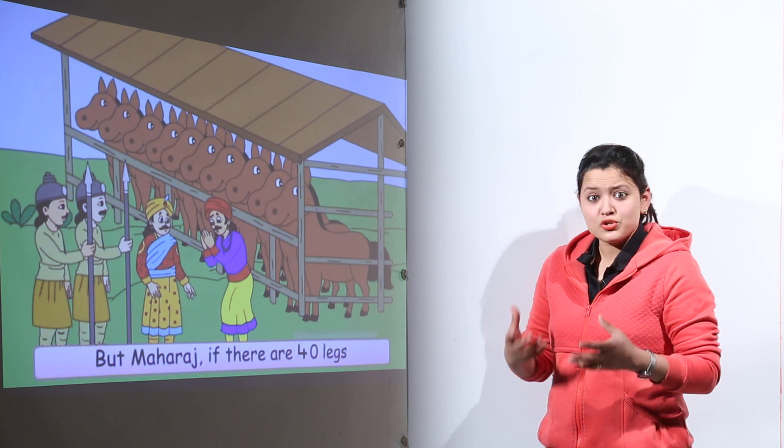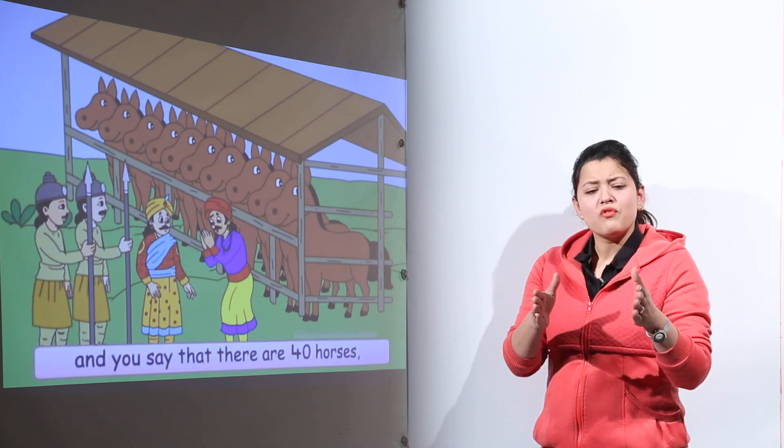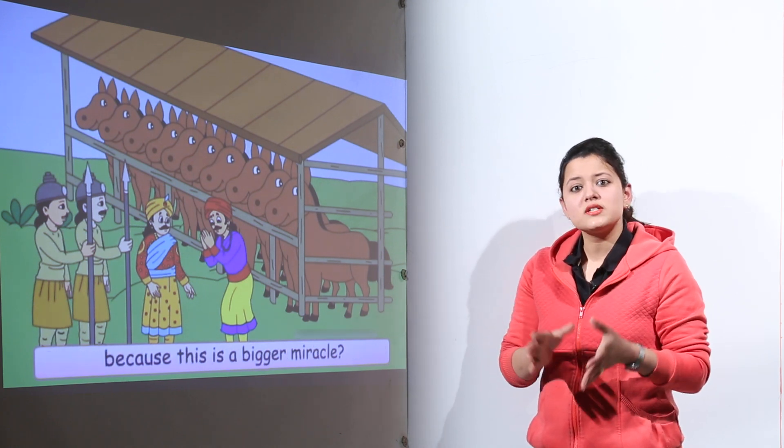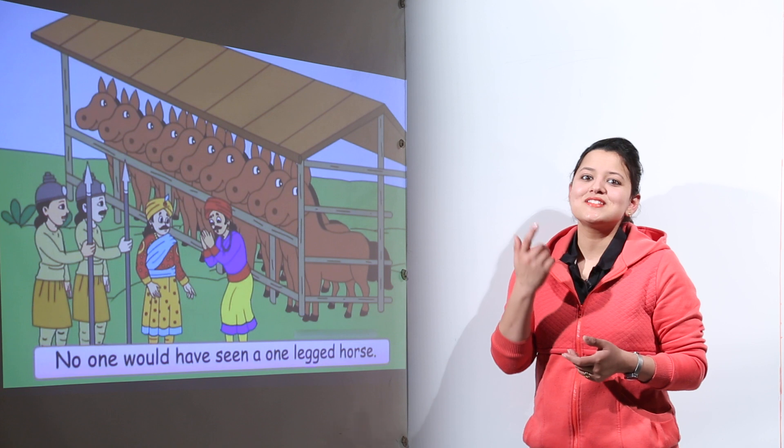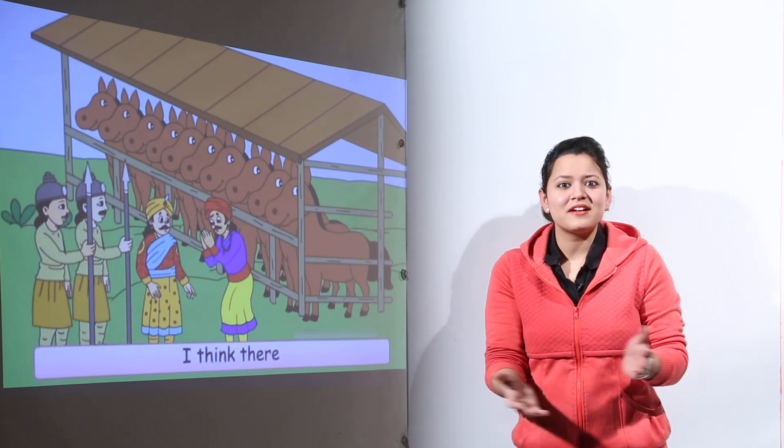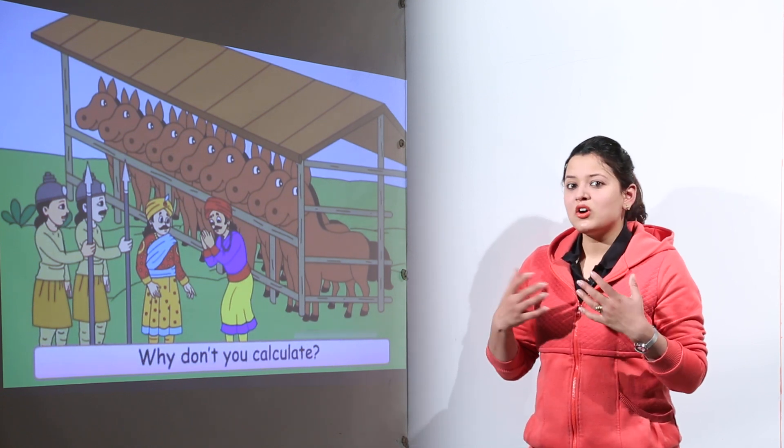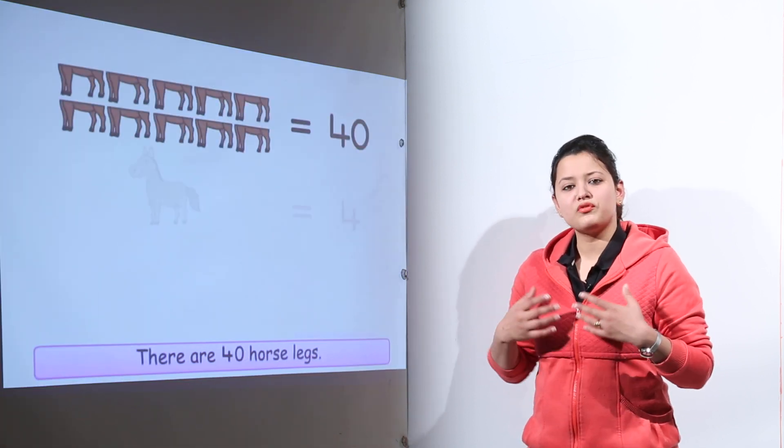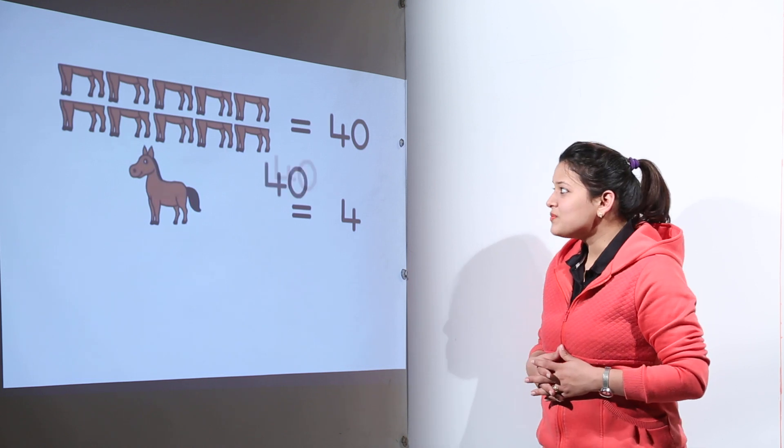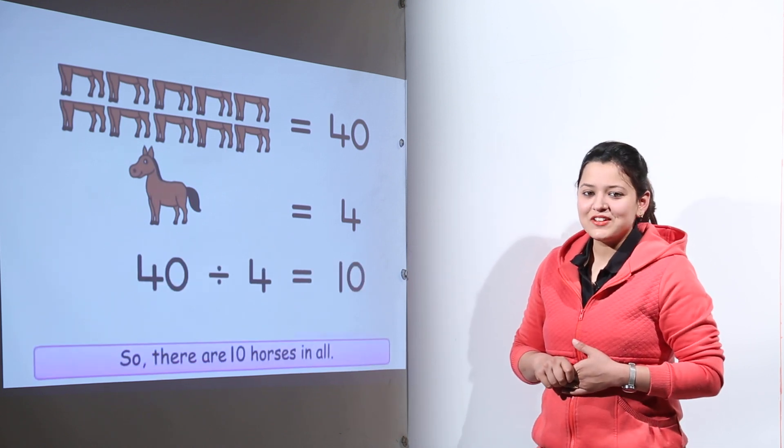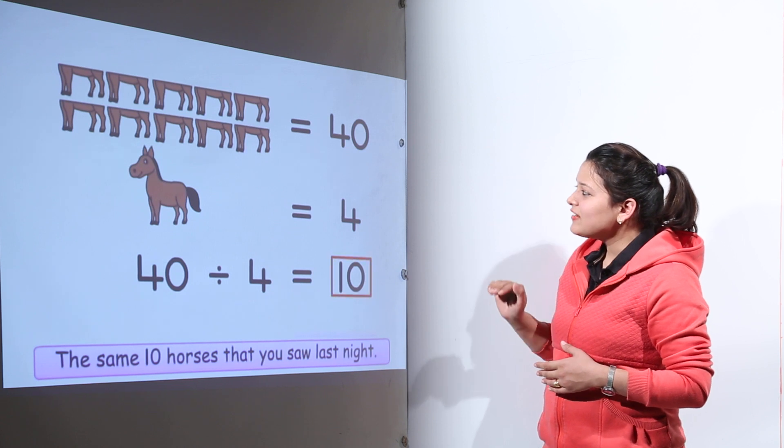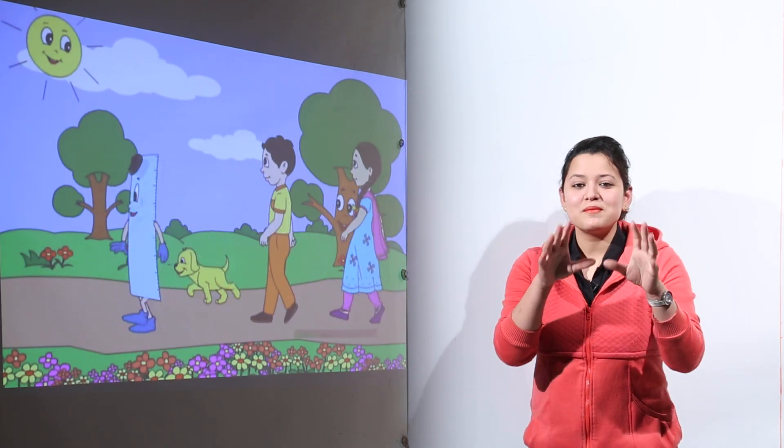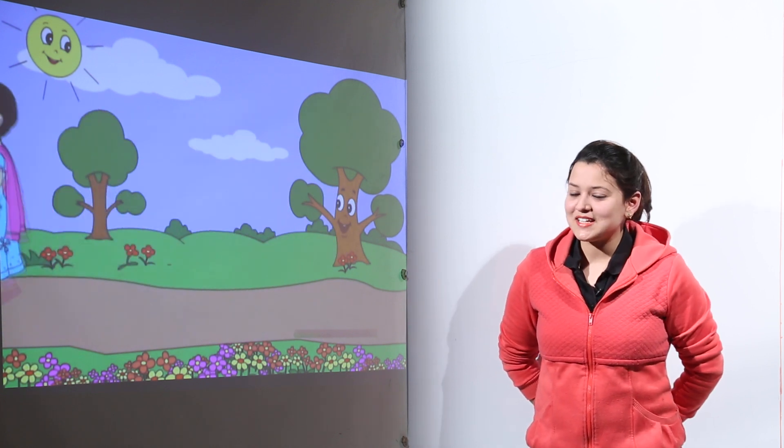But the Maharaja was told by minister that if there are 40 horses that means each horse is having one leg only. Because 40 horses having 40 legs means each horse has one leg. That's a bigger miracle. But that was a very much non acceptable thing for the king because all his horses were of the best quality. To which he objected that there must be some wrong thing in the calculation. So now the minister calculated that 40 divided by 4 gives us 10. So there must have been 10 horses in the stable at that time.